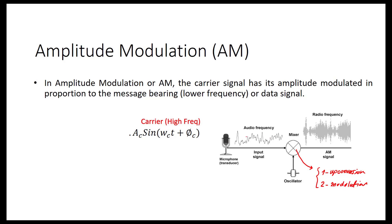As you see here, we have the audio frequency as the input signal and it has a low frequency — low F. We use a mixer in order to upconvert and modulate this. At the output, we have RF frequency — radio frequency, high frequency. Sometimes we call this direct conversion, and we are going to explain this in our future course on transmitter and receiver structures.